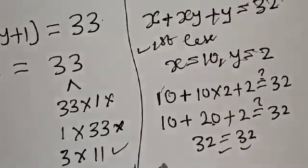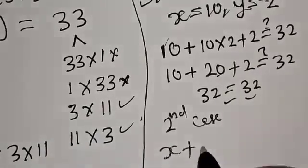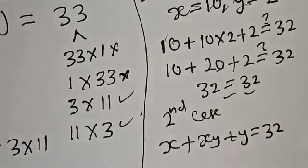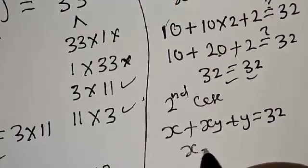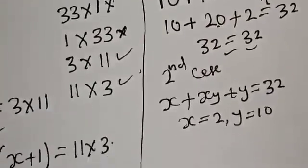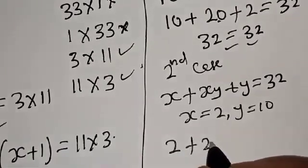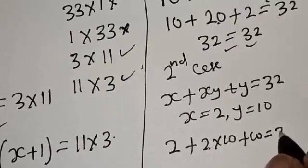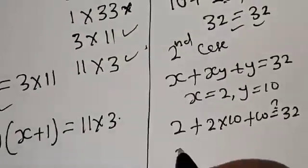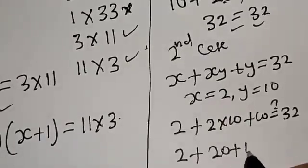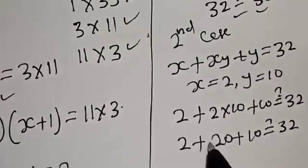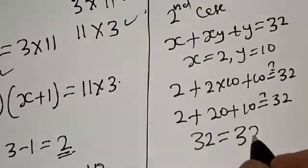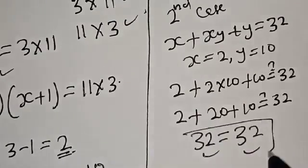For Case 2, x equals 2 and y equals 10. We have 2 plus 2 times 10 plus 10, which is 2 plus 20 plus 10, that is 32, equal to 32. The left-hand side equals the right-hand side, which satisfies the given equation.